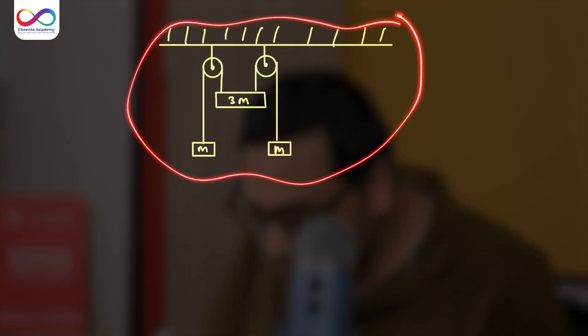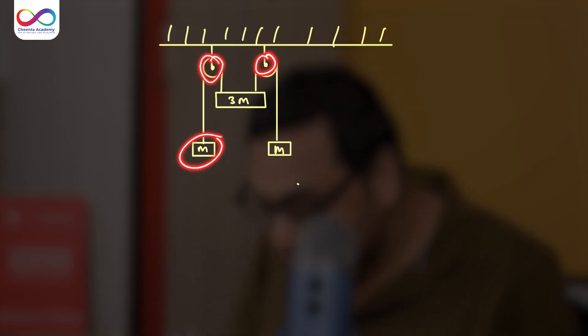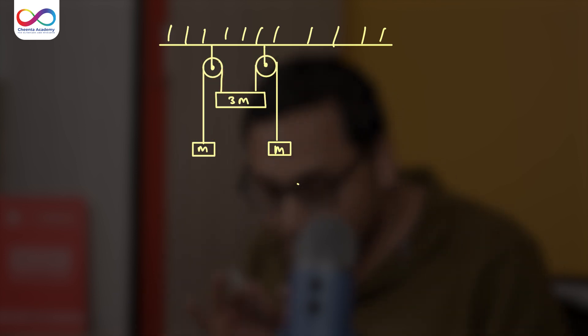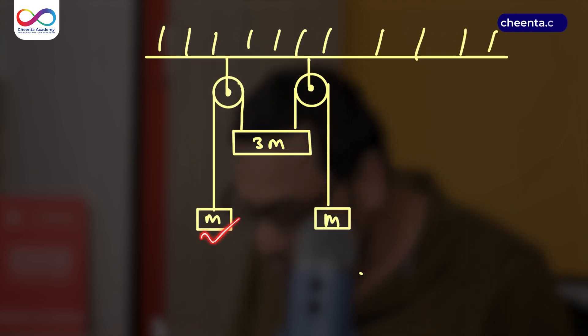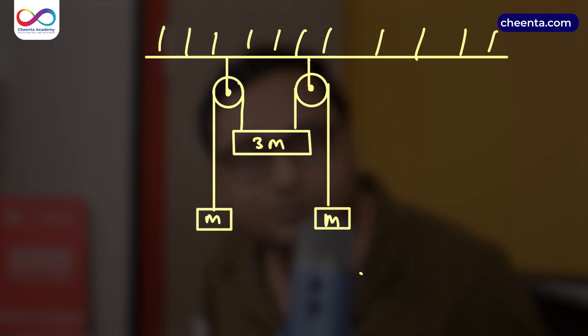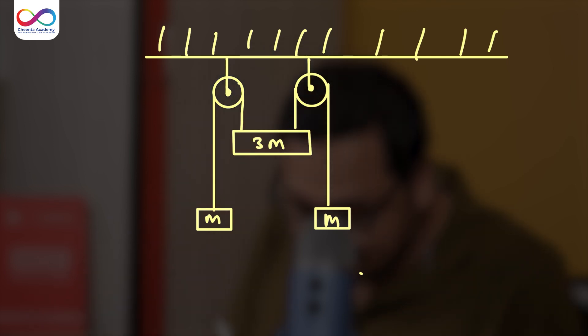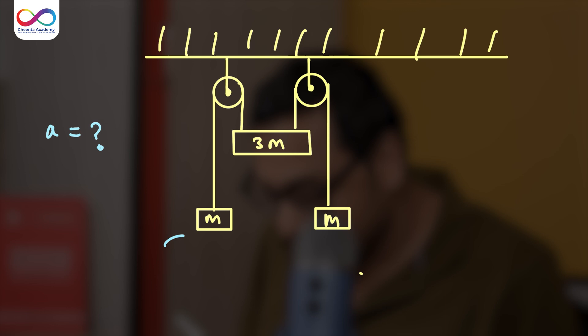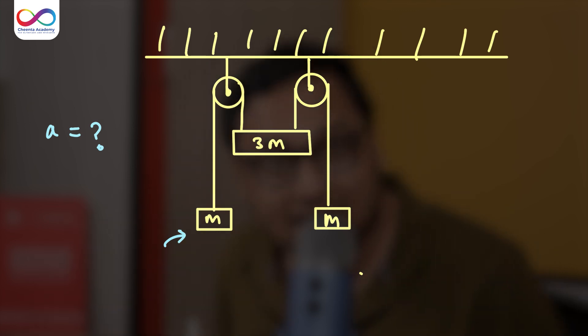There are two pulleys and there are three bodies in the figure, and the ropes are also there. The mass of the bodies are given as M, M, and 3M. The question is this: What is the acceleration of the body with mass M? That is the question that we want to solve.